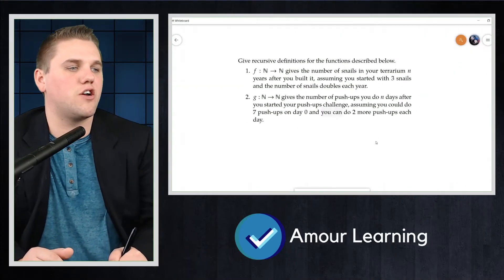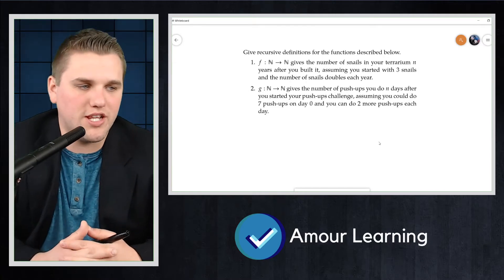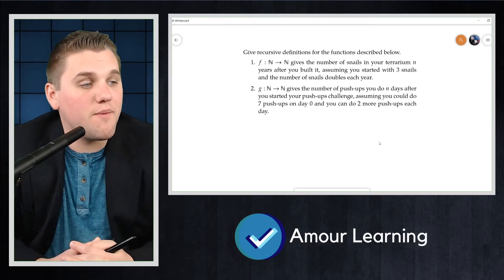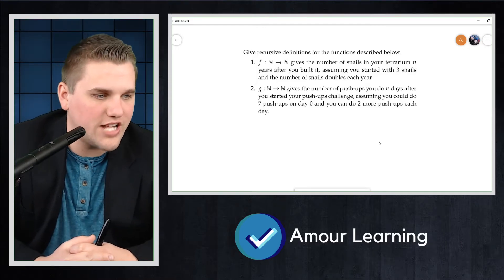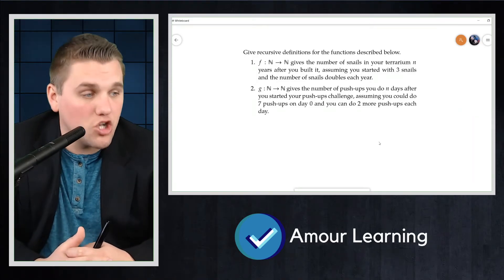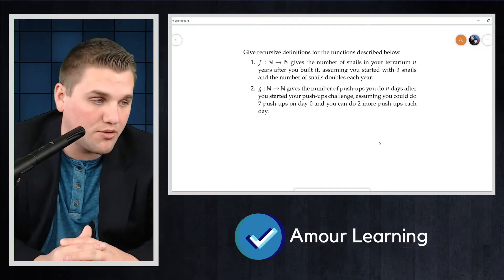Give recursive definitions for the functions described below. f: N → N gives the number of snails in your terrarium n years after you built it, assuming you started with three snails and the number of snails doubles each year.